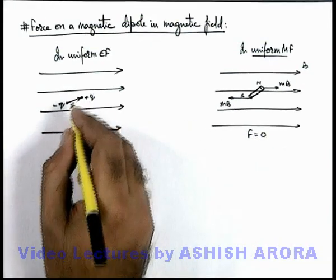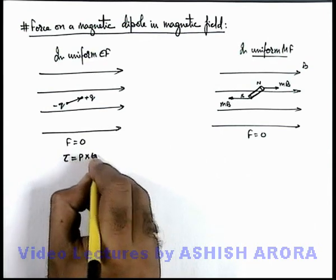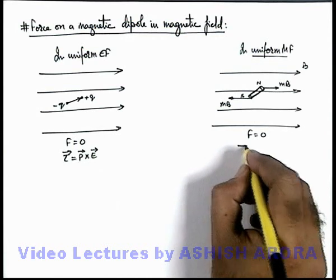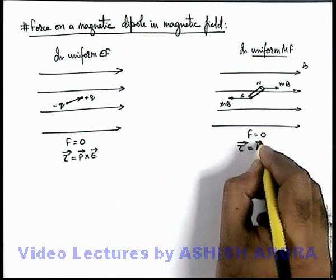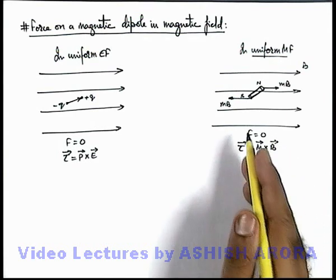And as here, the dipole experiences a torque which is given as P cross E. Similar to this here we can write that magnetic dipole also experiences a torque which is M cross B, where M is the magnetic dipole moment or magnetic moment of the dipole.